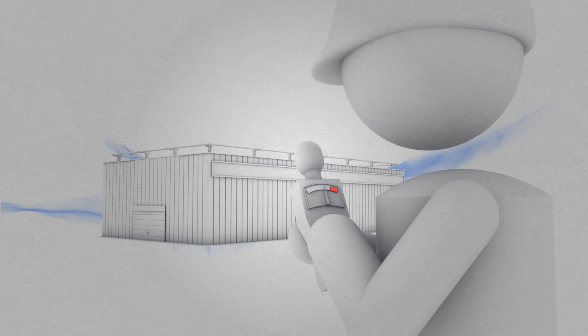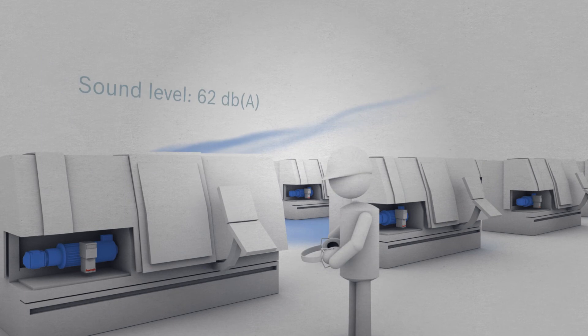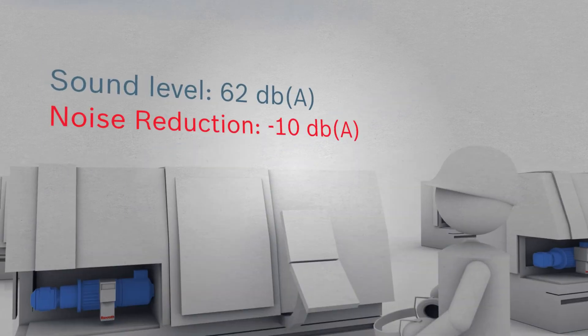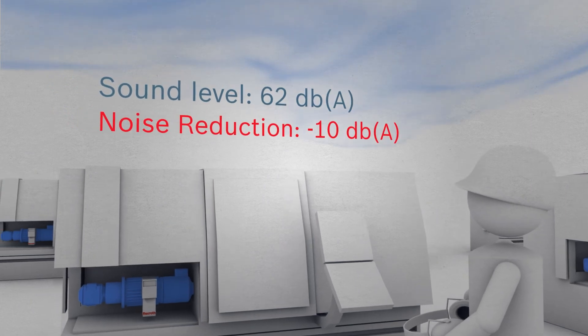Now imagine that your lathes are now equipped with our variable speed pump drives. The sound level sinks to 62 dBA. That's 10 fewer decibels, effectively halving the perceived volume.